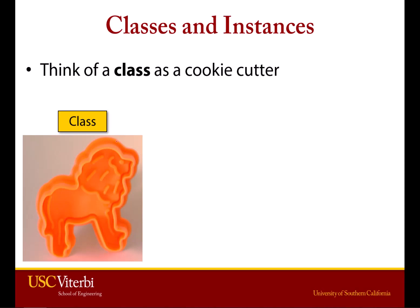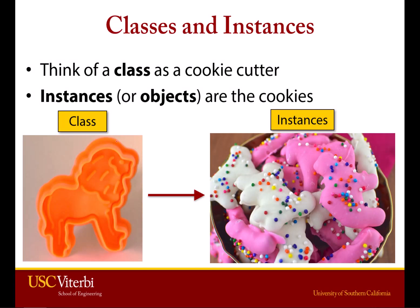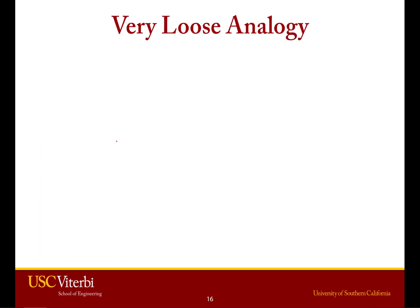A really good analogy: a class is a cookie cutter. It defines the structure, outline, and general form of what the object is going to look like. But an object, or an instance, is the actual cookie. On the left we have the template for a cookie but no cookies; on the right we have actual delicious animal cracker cookies. This is a loose analogy, but it helps illustrate the concept.